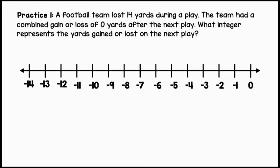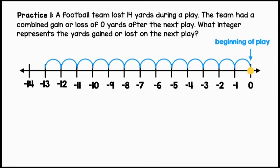We're going to use a horizontal number line to represent this situation. At zero, we can say that is the beginning of the play. To represent a loss of 14 yards, we're going to move 14 spaces to the left. That leaves us at negative 14 at the end of the first play.